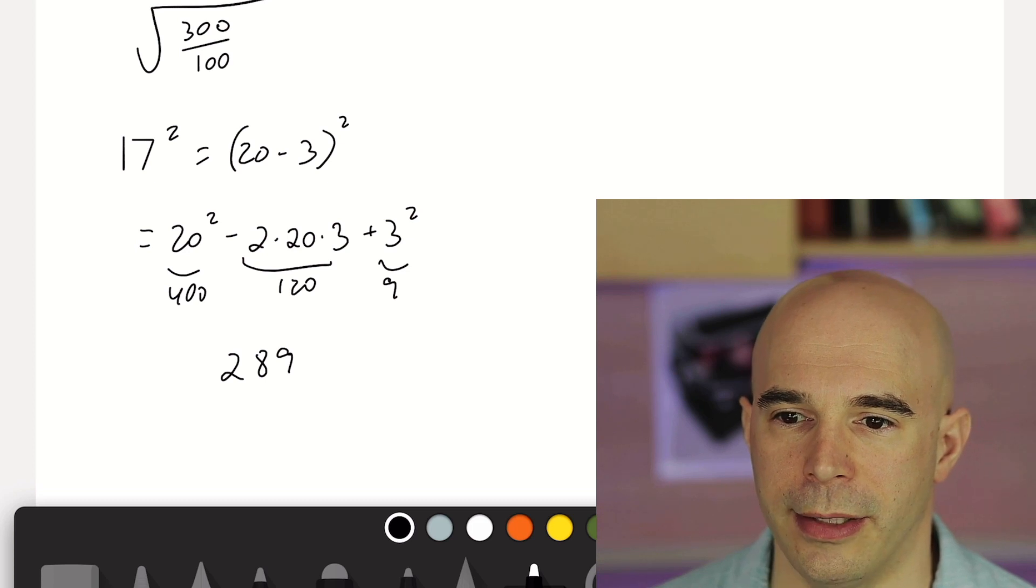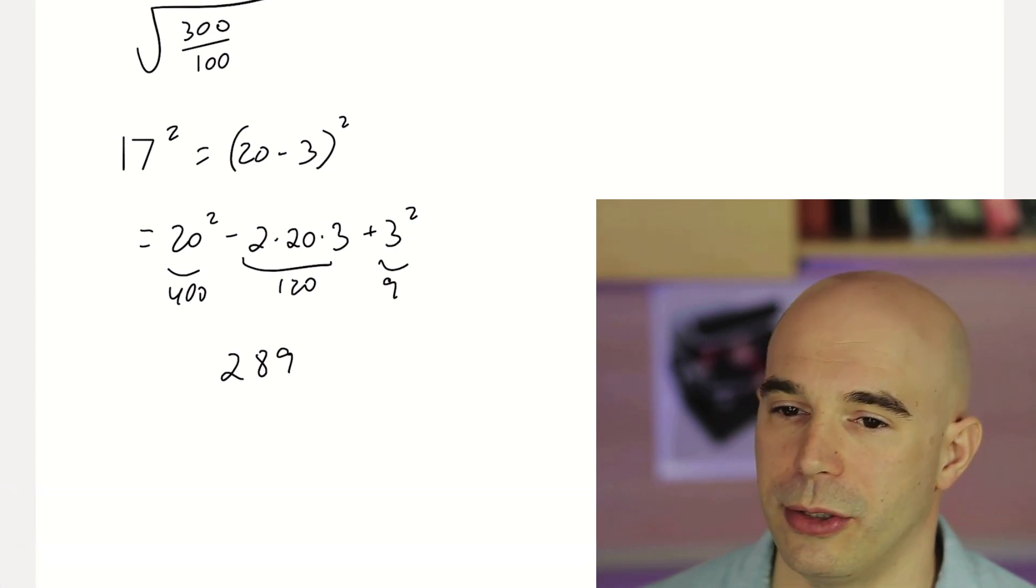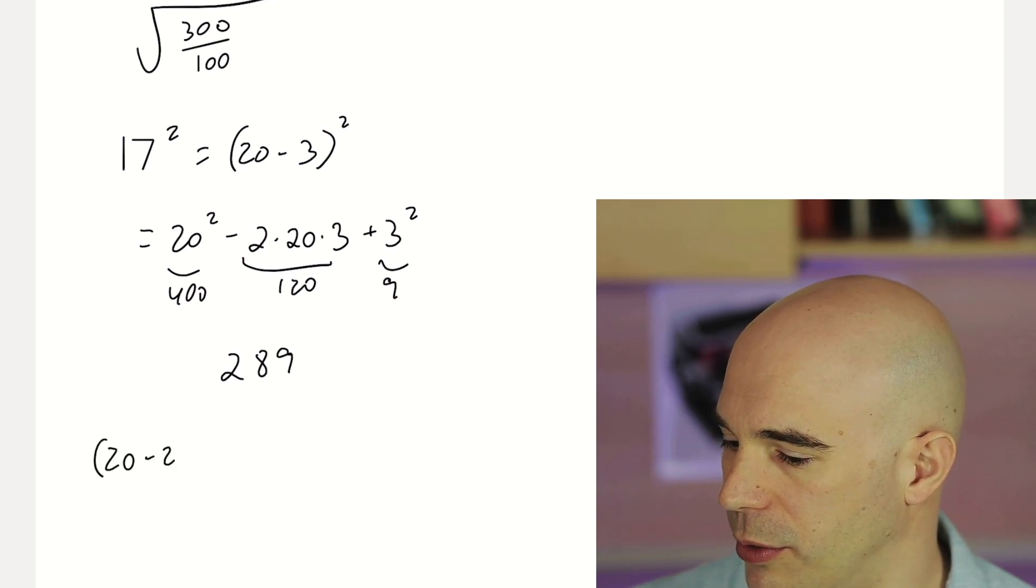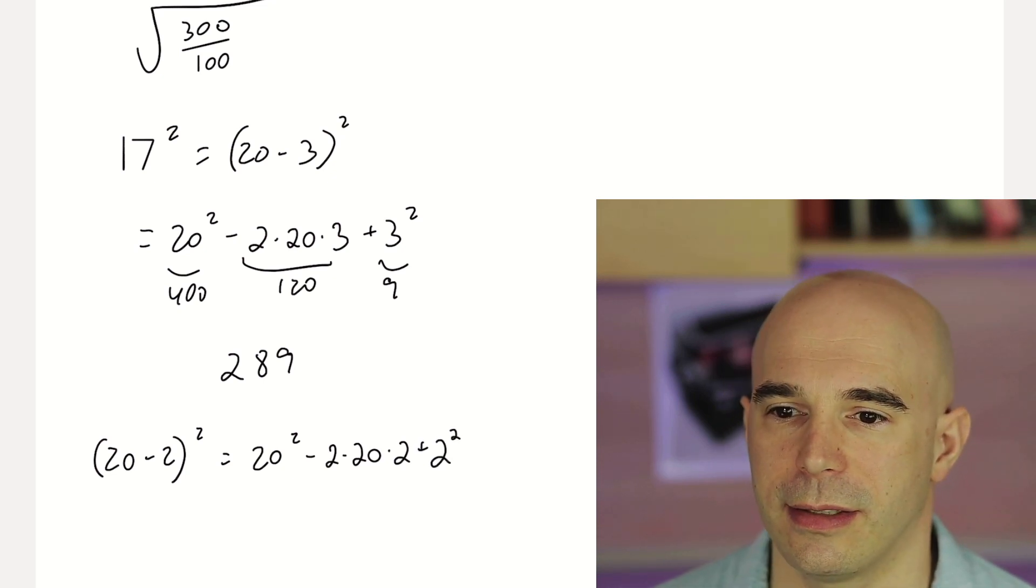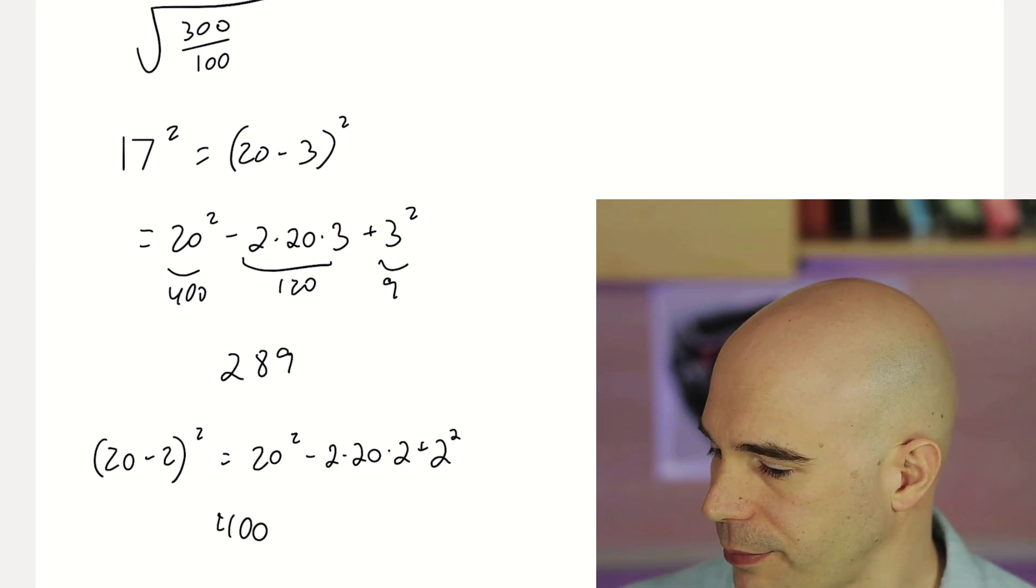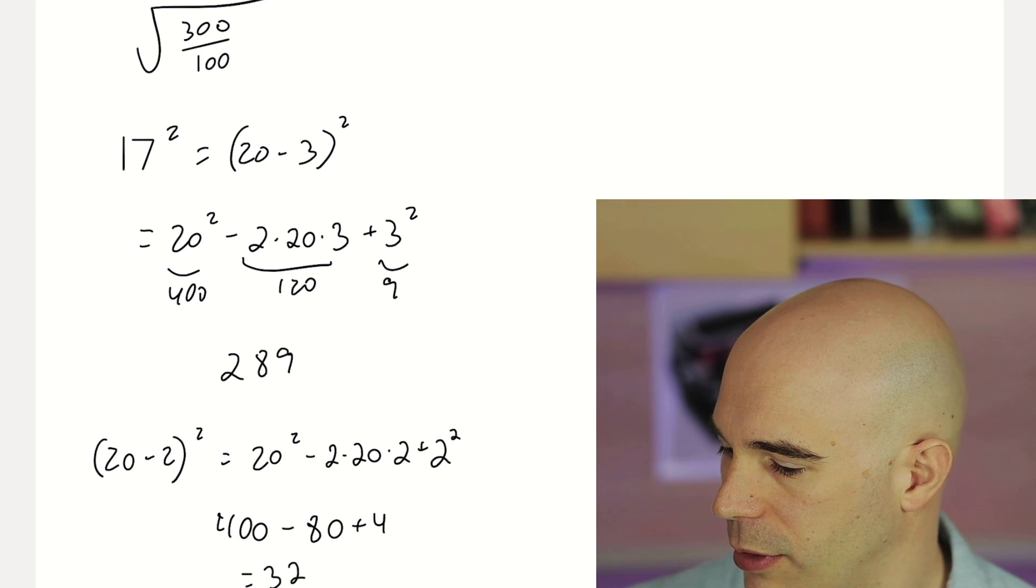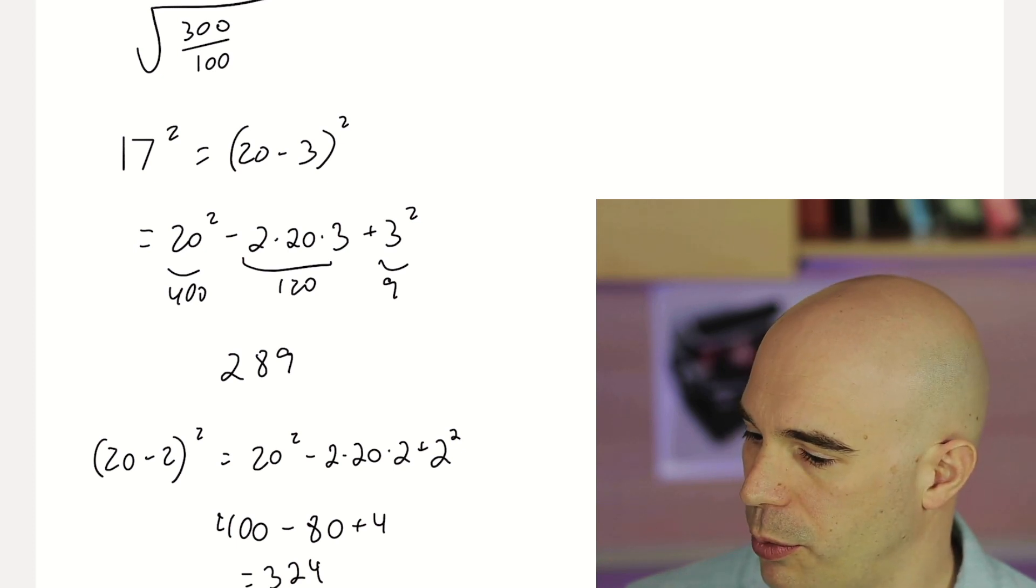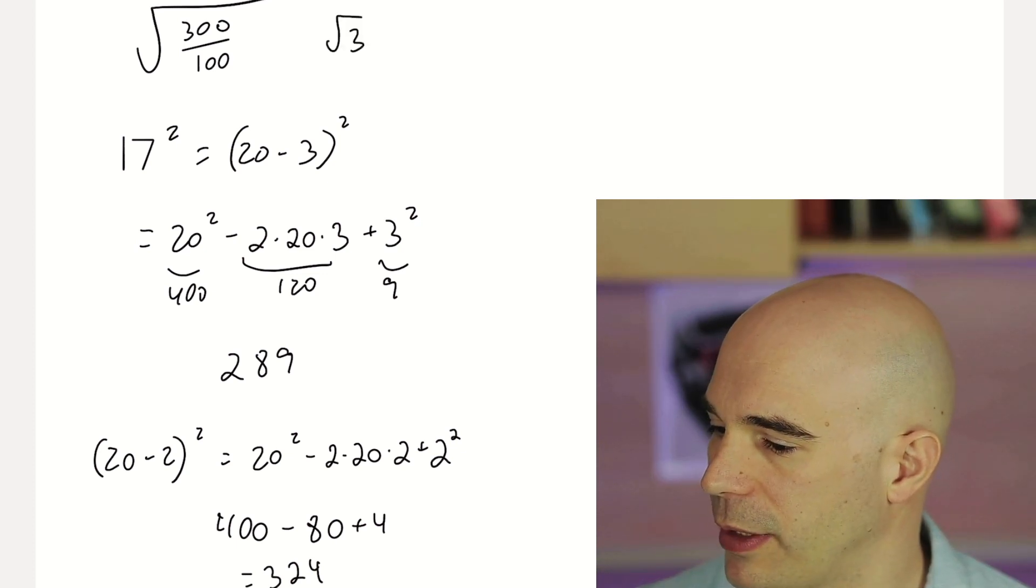So now we know 17 squared is 289. And 18 squared is probably going to be above 300. And if we wanted to check, we would go, okay, 20 minus 2 squared. What's that? That's 20 squared minus 2 times 20 times 2. And guess what? Every time I go through something like this, I get better at the special products. So that's 400 minus 80 plus 4, so 324. Okay. So now we've confirmed that the square root of 300 is somewhere in between 17 and 18. And if we want to divide by 10, because we wanted the square root of 3, we can now say that the square root of 3 is approximately 1.7.